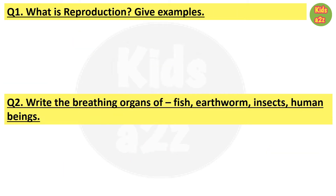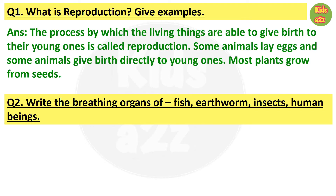In this worksheet, the first question is: what is reproduction, give examples. The answer is: the process by which living things are able to give birth to their young ones is called reproduction. Some animals lay eggs and some animals give birth directly to young ones, and most plants grow from seeds.